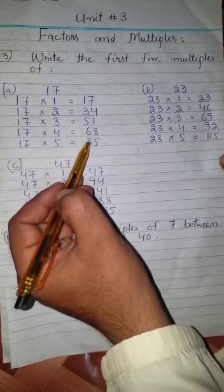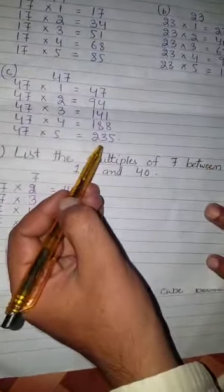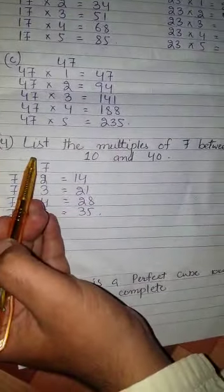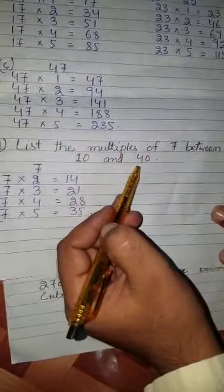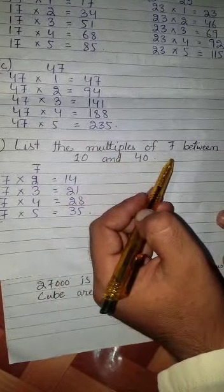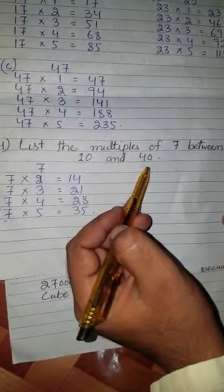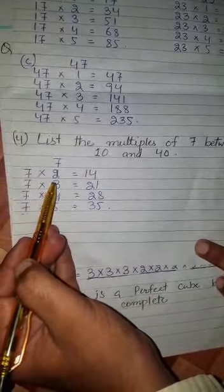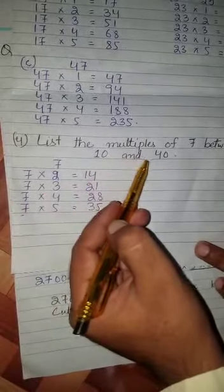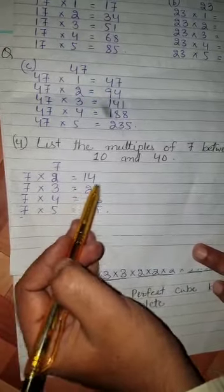The answer is the total multiples of 7 between 10 and 40. 7 is the total multiples of 7 between 10 and 40.